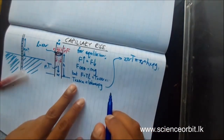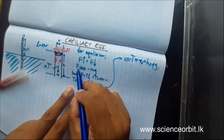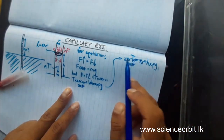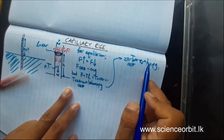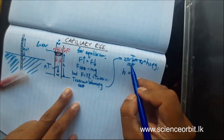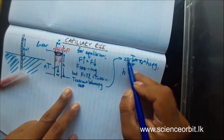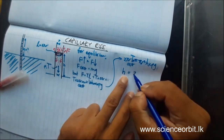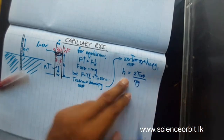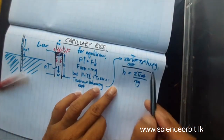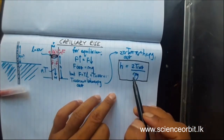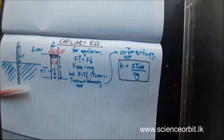Our target is finding simple H. When you rearrange the equation, you end up with H equals 2T cos theta divided by R rho g. This is the equation for capillary rise. Capillary rise depends on the surface tension of the liquid, the contact angle, the radius of the capillary tube, and the density of the liquid. These are the factors affecting capillary rise.